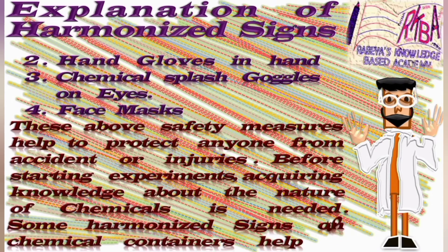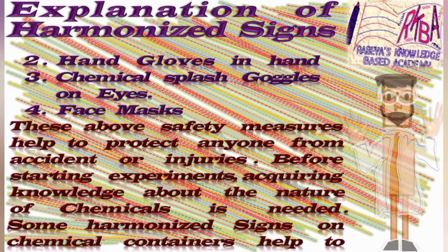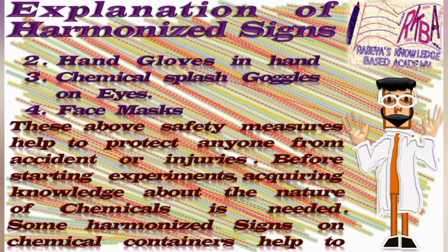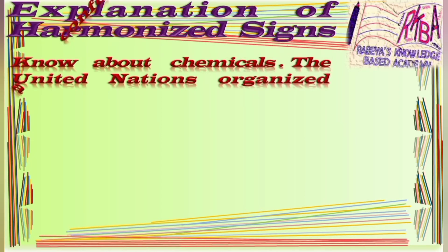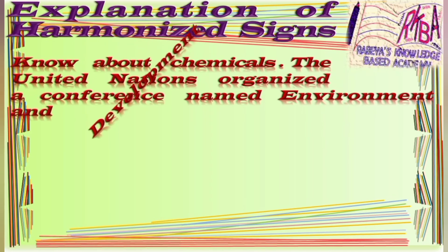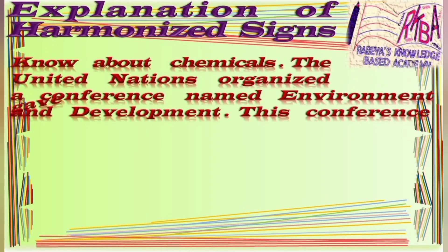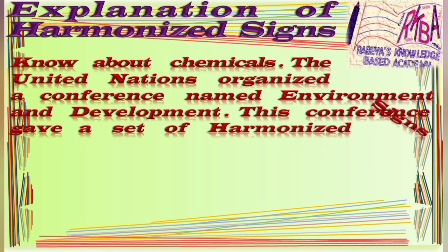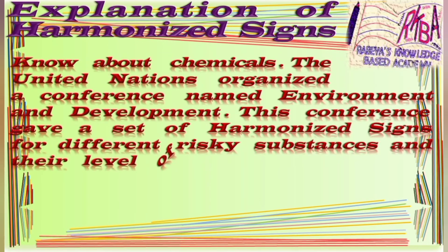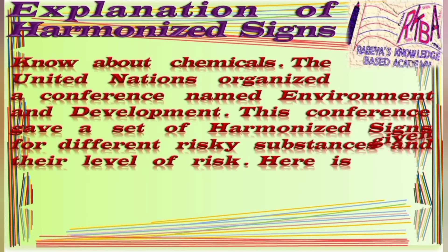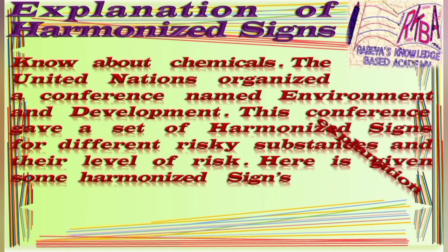Before starting experiments, acquiring knowledge about the nature of chemicals is needed. Some harmonized science signs are shown on chemical containers. To inform people about chemicals, the United Nations organized a conference named Environment and Development. This conference established a set of harmonized science signs for different risky substances and their level of risk. Here are given some harmonized science explanations for chemistry laboratories.